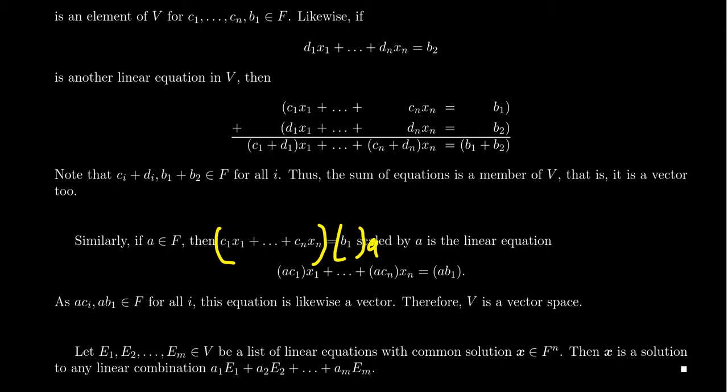On the left-hand side, distribute it through, in which case you're going to get ac1x1, you're going to get ac2x2, all the way up to acnxn, and the right-hand side is ab1.